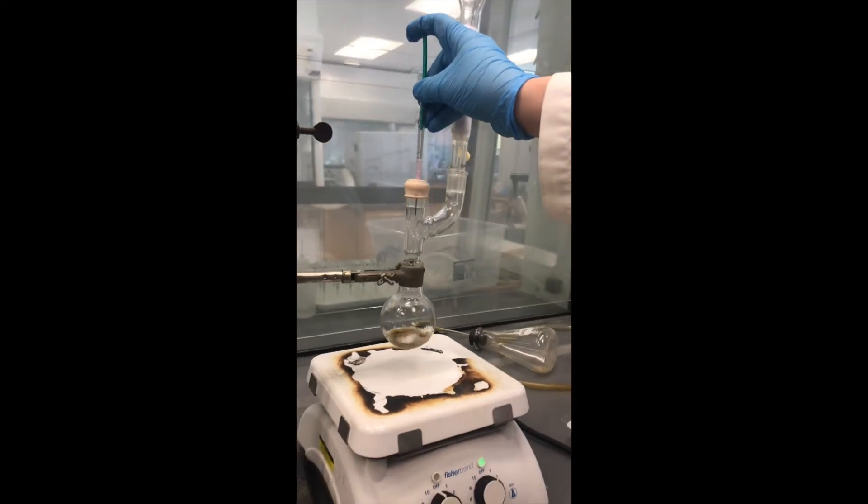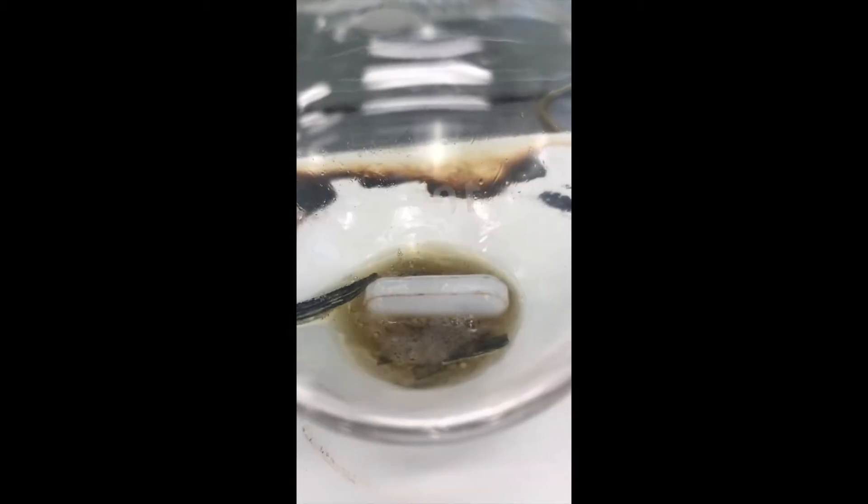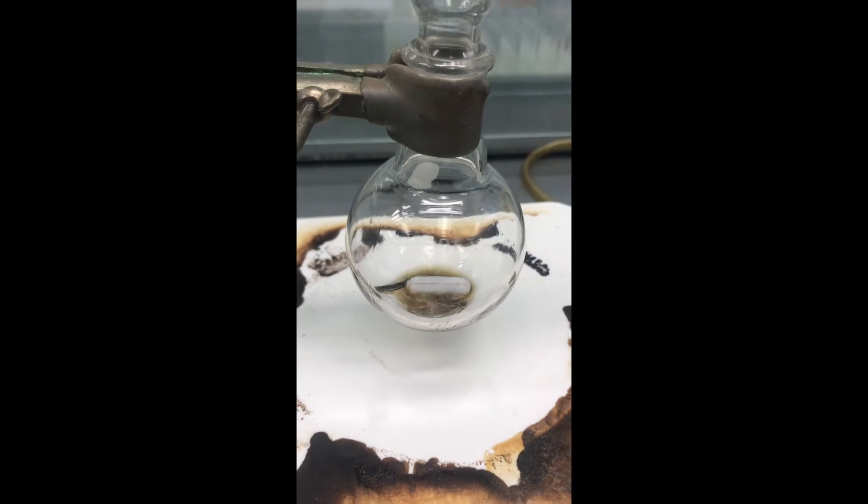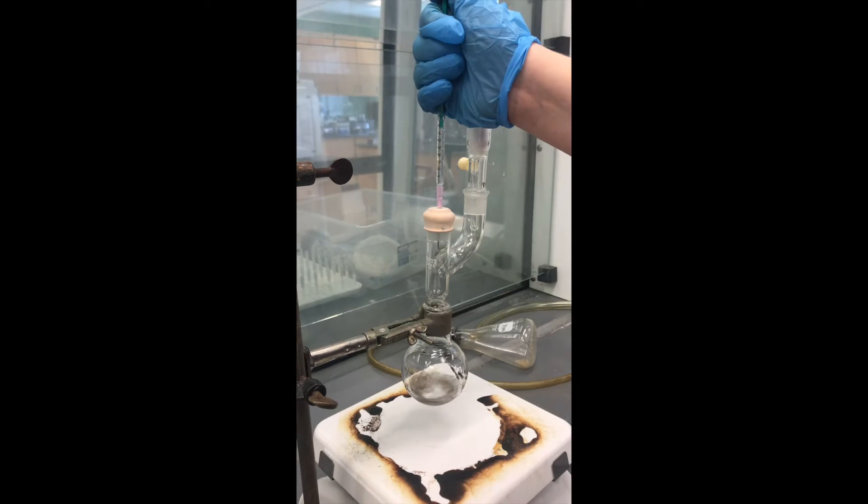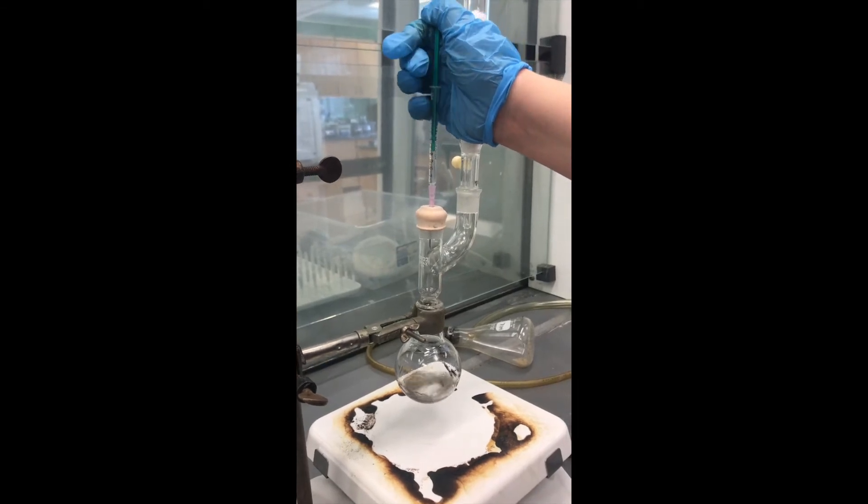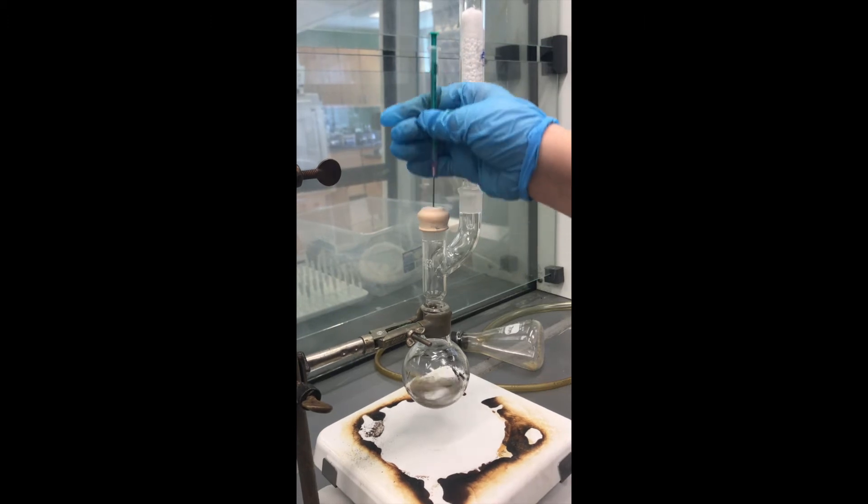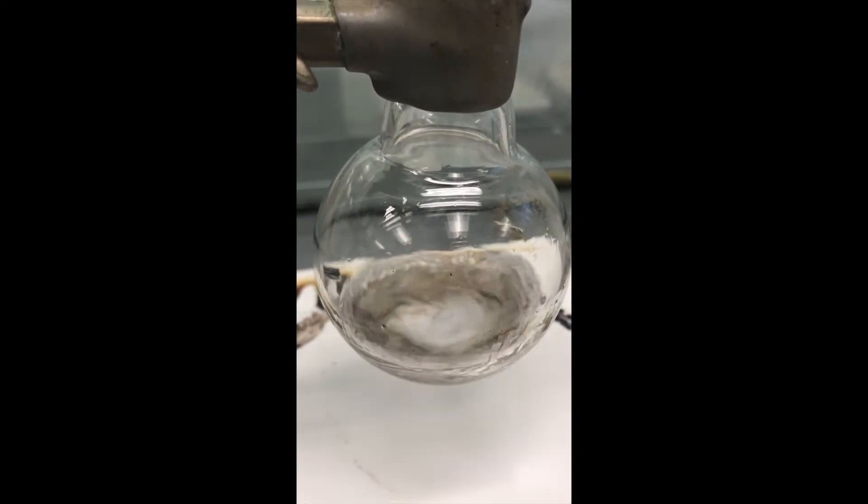Over the next 15 minutes, I added the rest of the bromobenzene solution. I rinsed out my vial with anhydrous ether and added that to the reaction as well. At times, I had to gently heat the reaction to keep it going. And I did end up adding a little bit of anhydrous ether to make sure my volume was remaining constant. For the next 15 minutes, I monitored the reaction and watched as the magnesium was being used up.